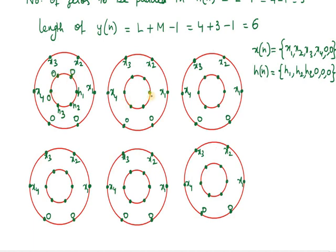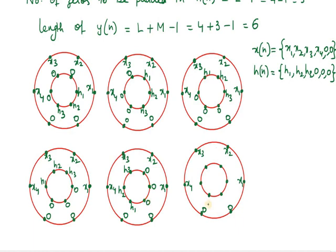In the next step, h(n) is moved by one position in the anticlockwise direction, so h1 starts from the next position. This is repeated for each subsequent step: h1 advances one position anticlockwise each time, with h2, h3 and the three zeros following in clockwise order. This continues through all six positions, giving six configurations of h(n) on the inner circle.